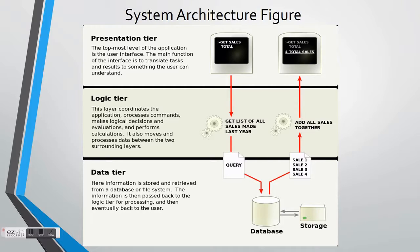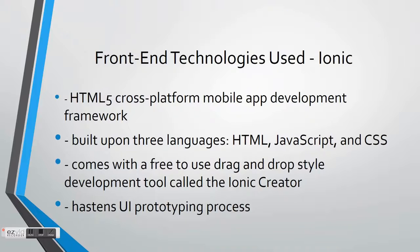One of the front-end technologies used to develop the app is the Ionic framework. Ionic is a HTML5 cross-platform framework that focuses on giving a native view, since at its core it is essentially running a website in a native app shell. It uses Cordova, and most of the app is built upon three languages: HTML, JavaScript, and CSS.